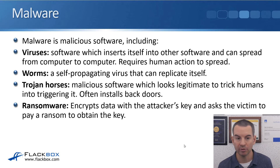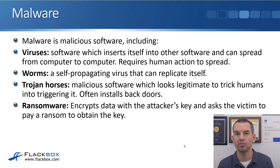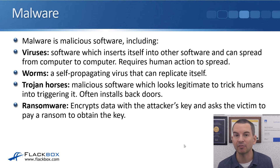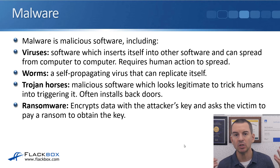When talking about Trojan horses with malware, this is malicious software which looks legitimate to trick humans into triggering it, and it often installs back doors. For example, maybe you're a gamer browsing the internet and you land on a page which tells you to click here to get free passwords to games. It looks nice on the outside, so you double-click on it. Unbeknown to you, the Trojan horse has delivered its payload — often installing backdoor software onto your PC which allows the attacker to take control of it or to see information on it later.